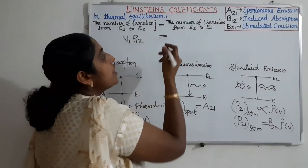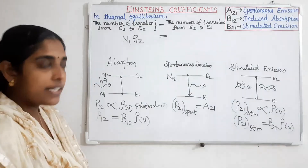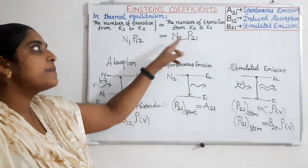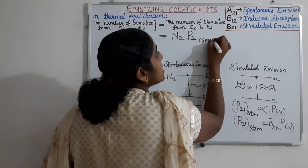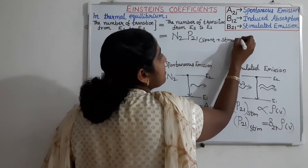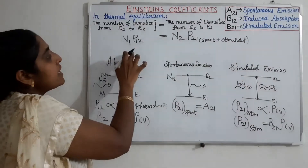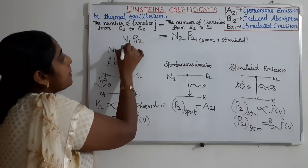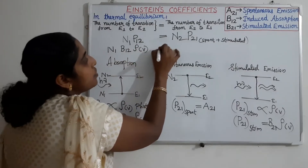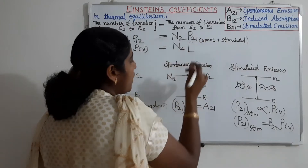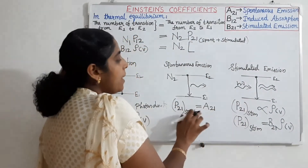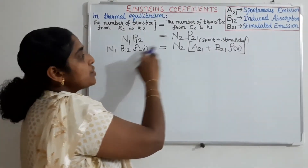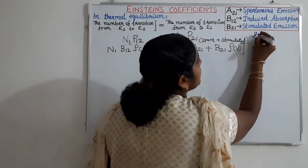The number of transitions from E2 to E1 depends upon N2 and the probability of transition P21. While considering P21, we have two processes — spontaneous and stimulated — so we must consider the effect of both. Substituting the expressions for probability of transition: N1 · B12 · ρν = N2 · (A21 + B21 · ρν), where B12, A21, B21 are Einstein's coefficients and ρν is the photon density.